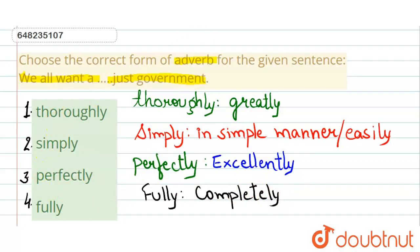So let's see here. We have a sentence: we all want a dash just government. We all want a perfectly just government. That perfect, that it is the best government. So that's why option 3 is our answer.